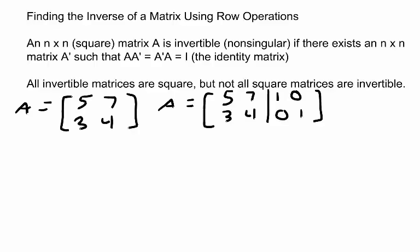Our goal will be to use row operations until we have the identity matrix on the left and our new inverse matrix A prime on the right.